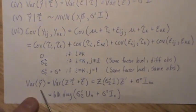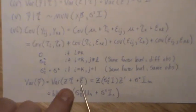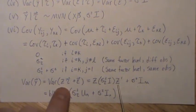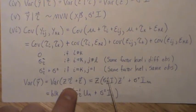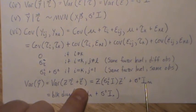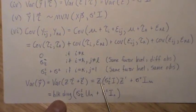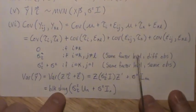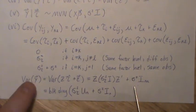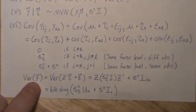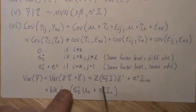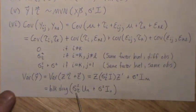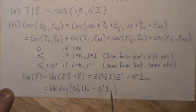In vector notation, Var(Y) = sigma tau squared * Z*Z' + sigma squared * I, which simplifies to a block diagonal structure. Since Z is block diagonal and I is block diagonal, the whole variance-covariance matrix is block diagonal with blocks of size n-by-n, each equal to sigma tau squared * U_n + sigma squared * I_n. The overall matrix is nA-by-nA, block diagonal with sigma tau squared * U_n + sigma squared * I_n repeated A times down the diagonal.